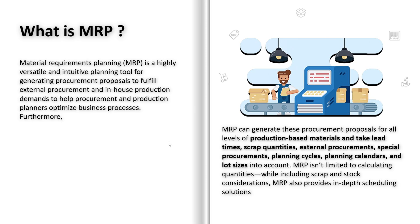Now, how MRP works here: SAP first checks stock levels to see how much is already available in our warehouse. Here is what we find — steel sheets: 600 in stock but we need 1000; motor units: 400 in stock but we need 500. Since we don't have enough materials, MRP will automatically generate procurement proposals. If we need to buy from suppliers, MRP creates a purchase requisition. If we need to produce the item in-house, MRP creates a planned order. SAP now suggests: purchase requisition for 400 steel sheets and 100 motor units to be bought externally, and a planned order to produce 500 drill machines in-house.